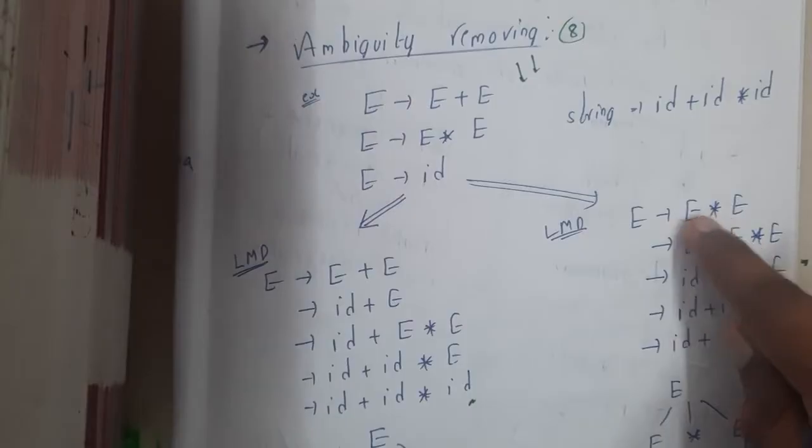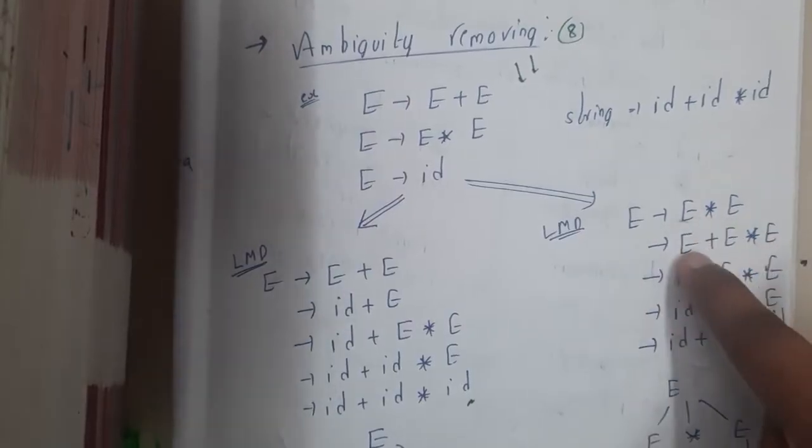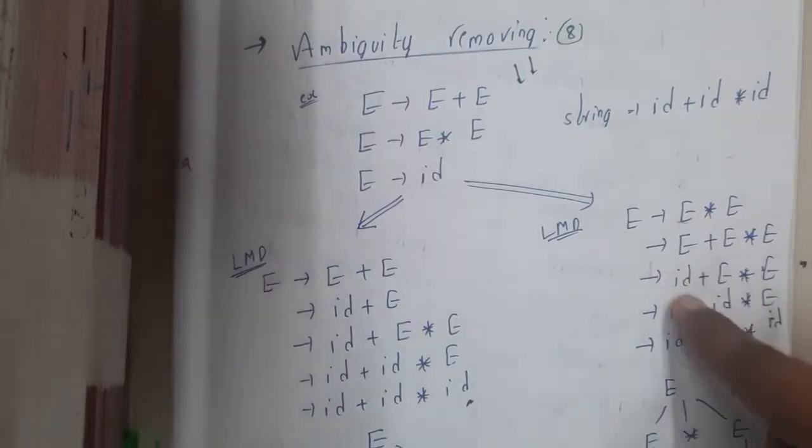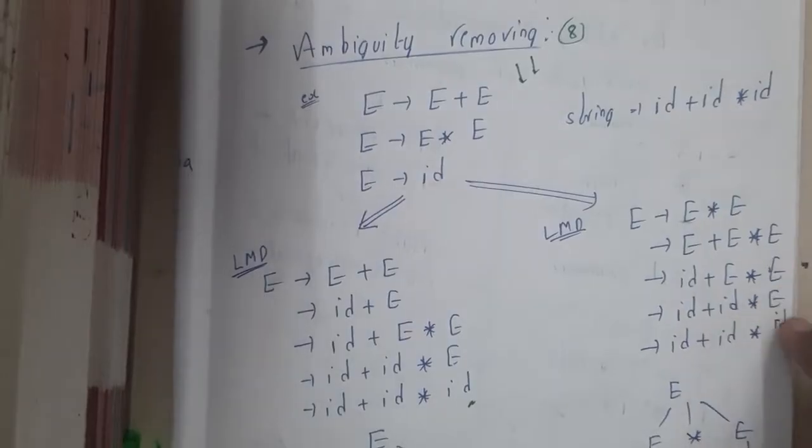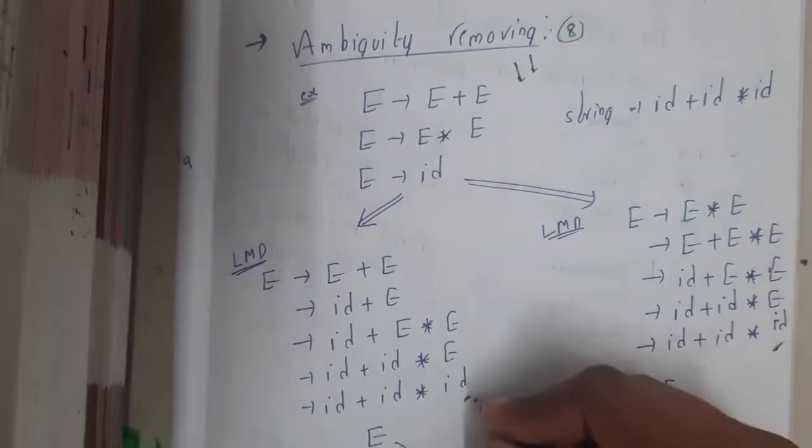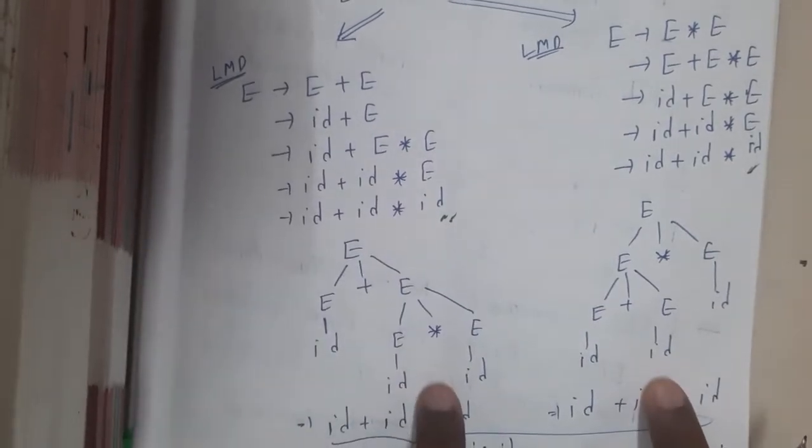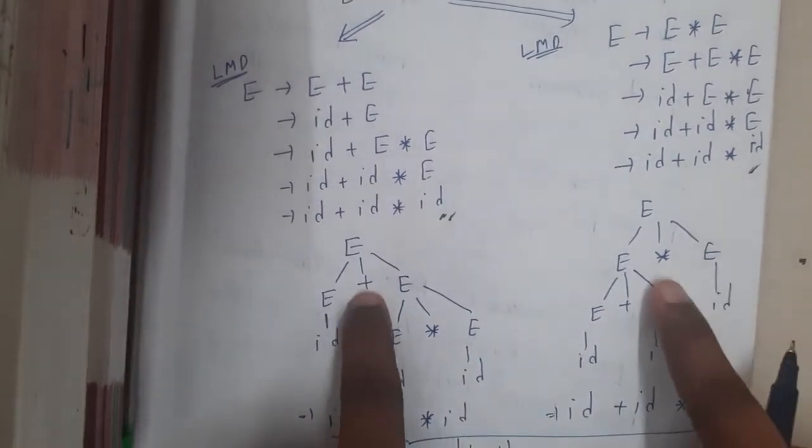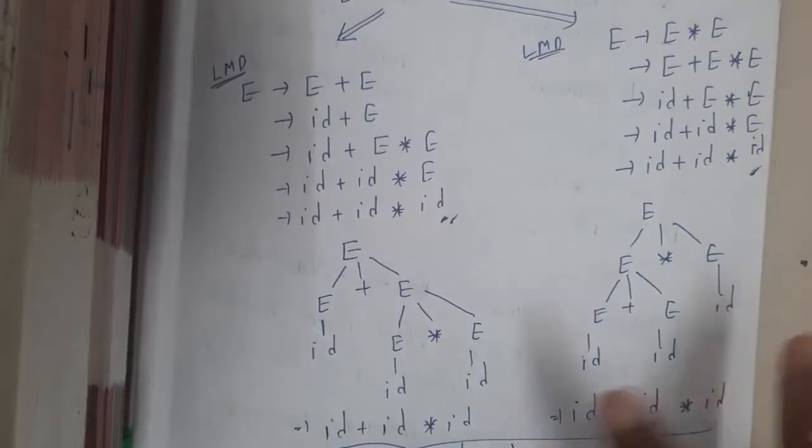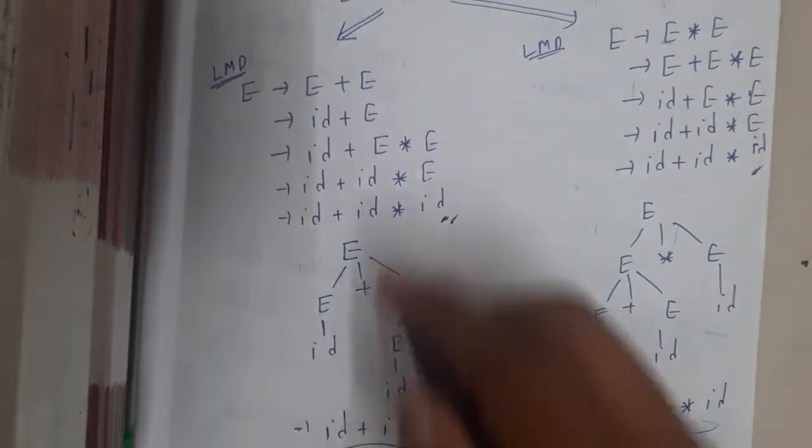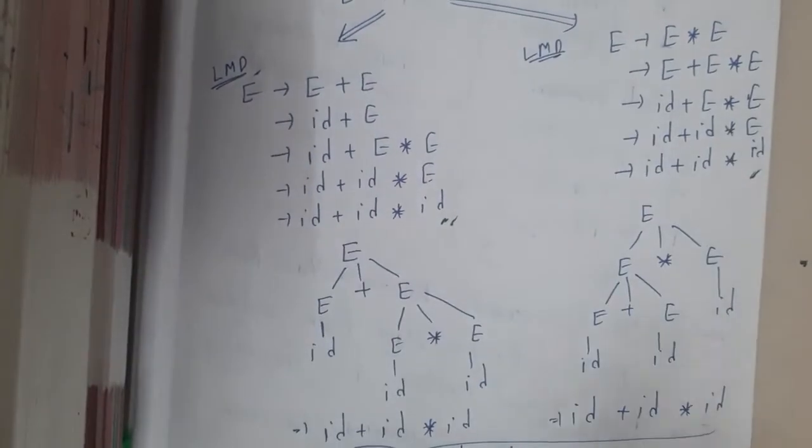And in the other way I took E×E. This E I changed into E+E, this E I changed to id, this E I changed to id, this E I changed to id. So I got the same string but we got two different ways. Here I took plus first and here I took into first. These are ambiguous, and again note that we used the leftmost derivation only in both cases.